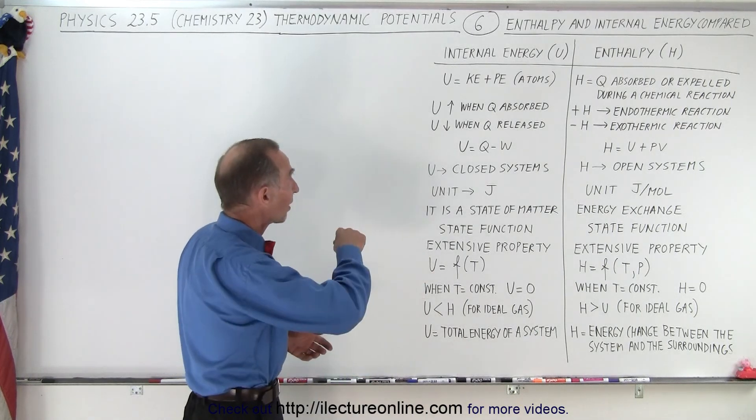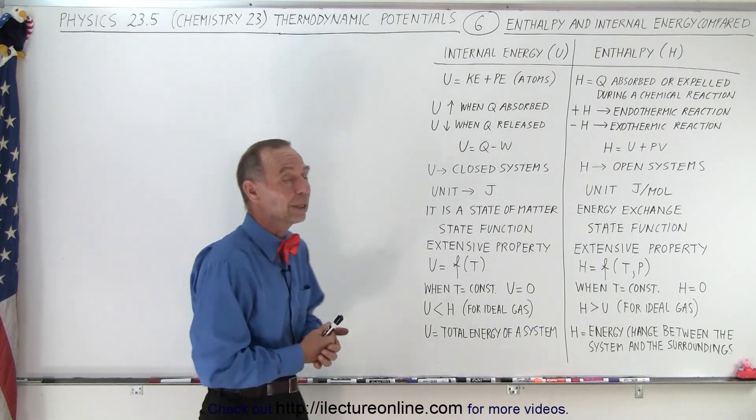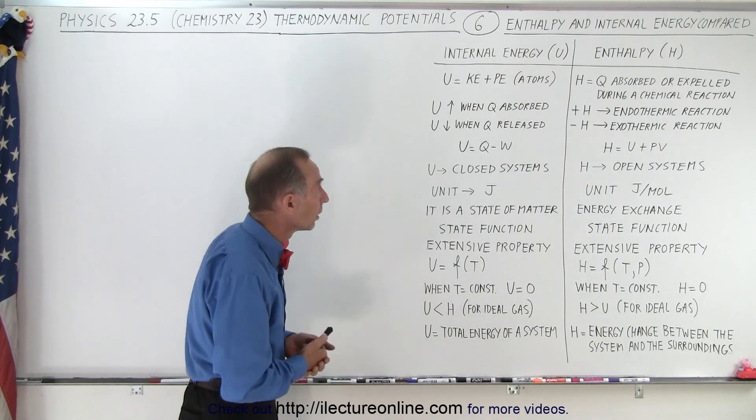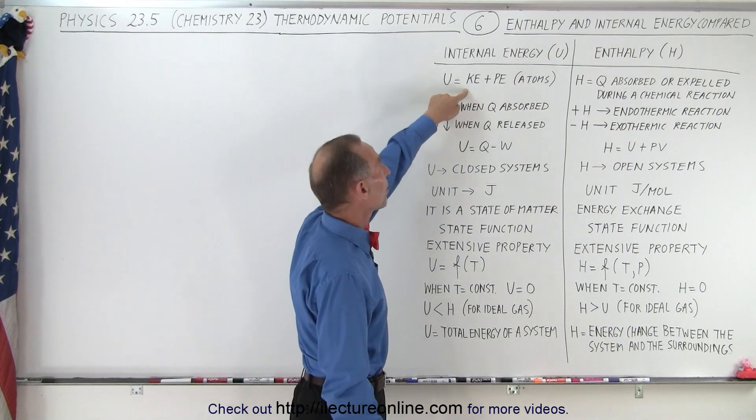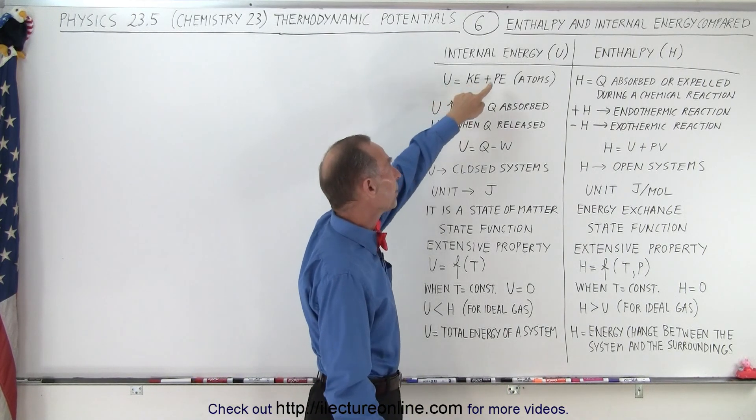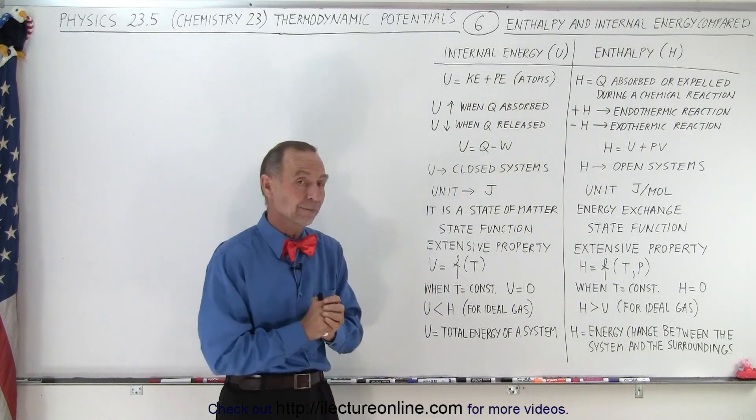So here we have two columns. On the left side we have internal energy represented by U, and on the right side we have enthalpy represented by H. You can see here that U, the internal energy, is simply the sum of the kinetic energy and the potential energy of the individual atoms and molecules of the system.